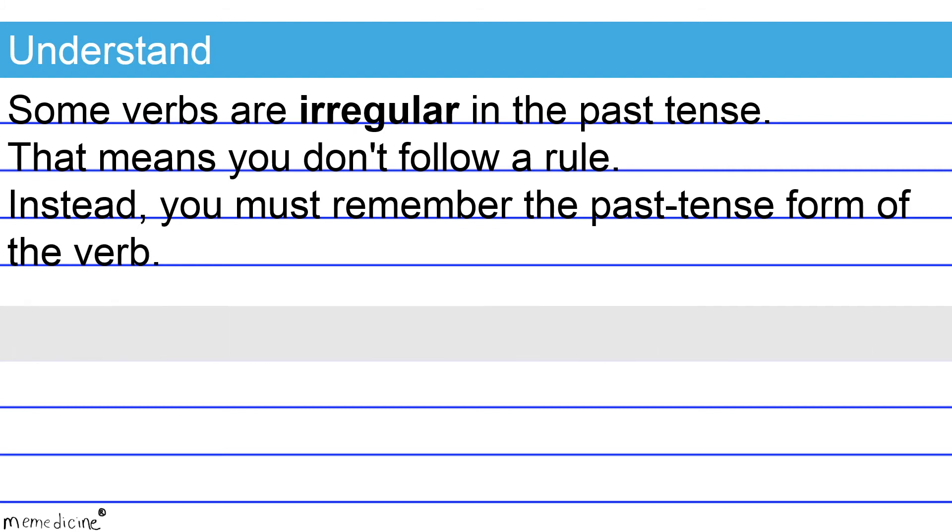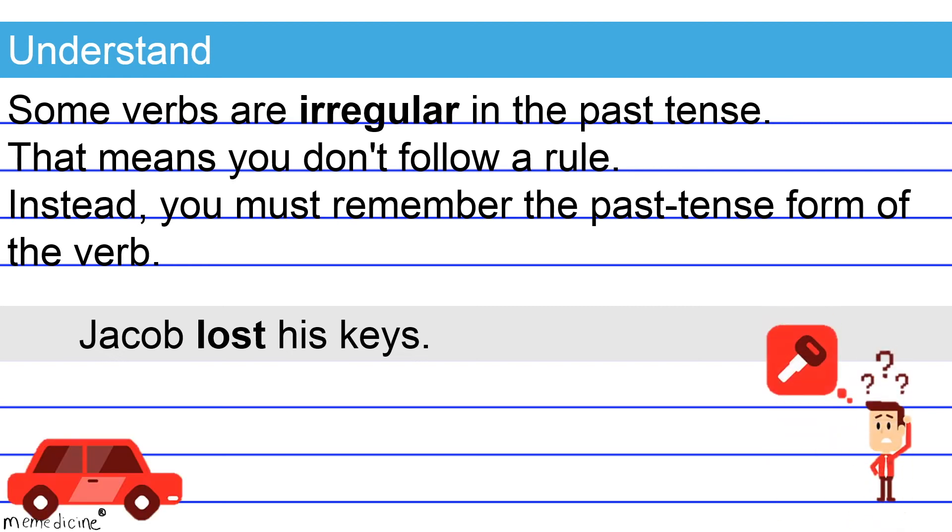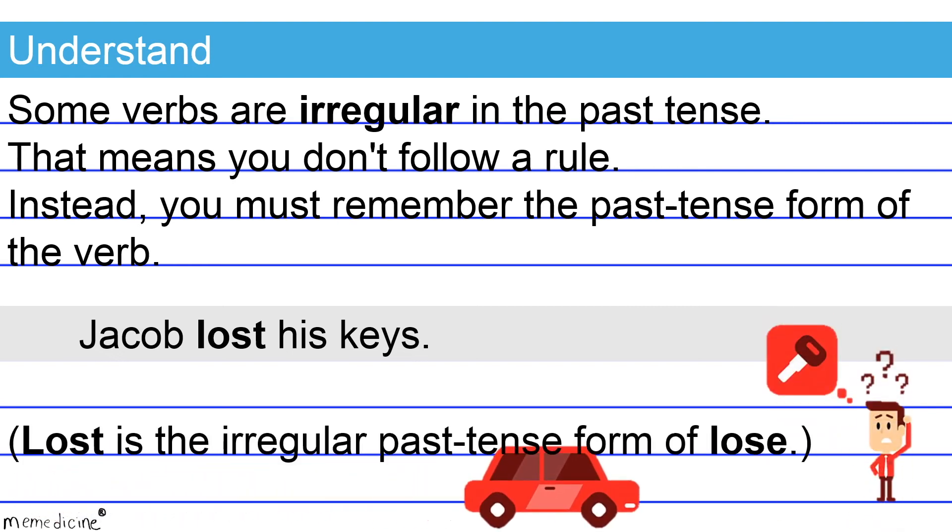Check out this example. Jacob lost his keys. Lost is the irregular past tense form of the verb lose. This is a correct shift and the overall sentence is formatted correctly.